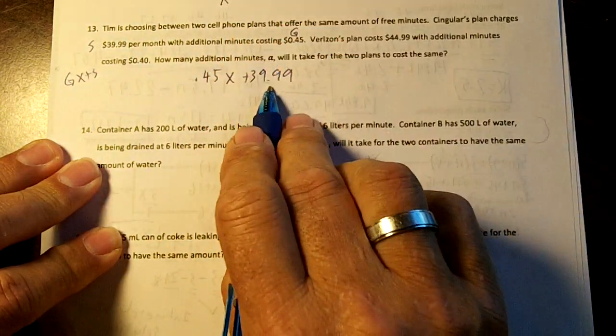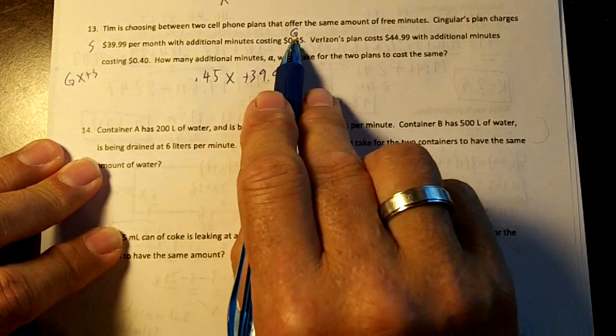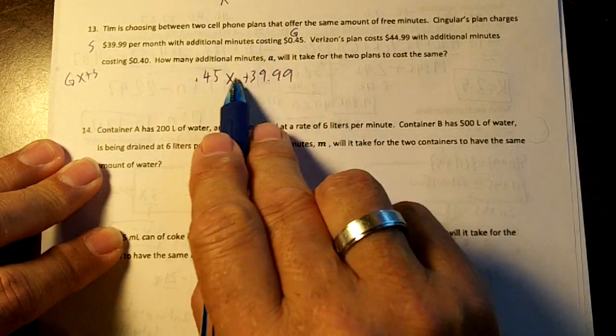That's going to be my monthly fee. So I'm going to pay $39.99 a month, but then every additional minute is going to run up the bill $0.45.